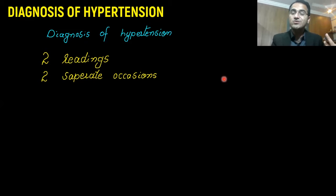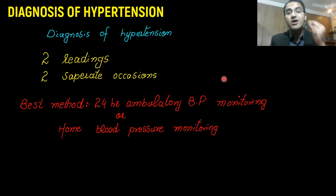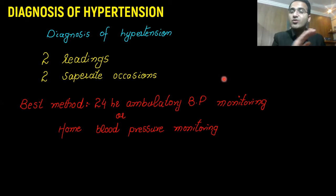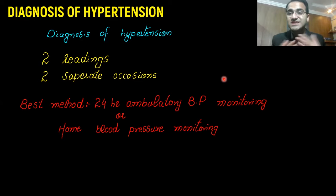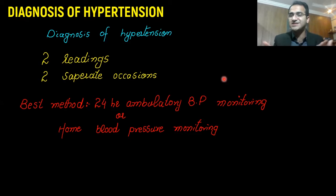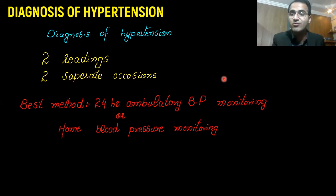The best method to diagnose hypertension is to check 24-hour ambulatory blood pressure. A device is attached to the patient's waist and a cuff is applied on the arm. That device takes blood pressure readings throughout 24 hours while the patient performs daily activities. This reading is more accurate because the patient is at home and relaxed, so home blood pressure monitoring or 24-hour ambulatory BP monitoring is the best method.